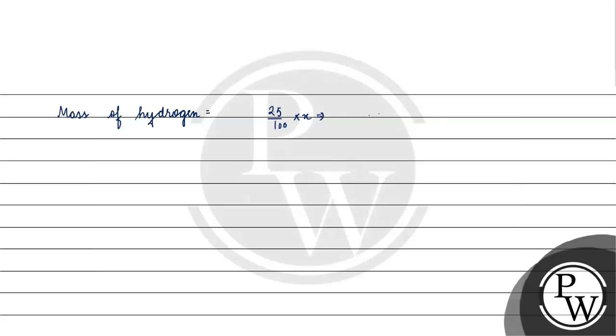So 25 or 25% hydrogen, which is 25x by 100 or x by 4.